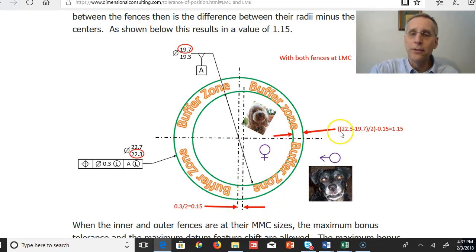So then this minimum distance when the parts are at least material condition, least material boundary, is the 22.3 outer fence minus the 19.7 inner fence divided by 2 to get it radial minus our 0.15 that the two centers could be offset or a 1.15 difference that will never be violated. This is the minimum distance that this buffer zone will be.